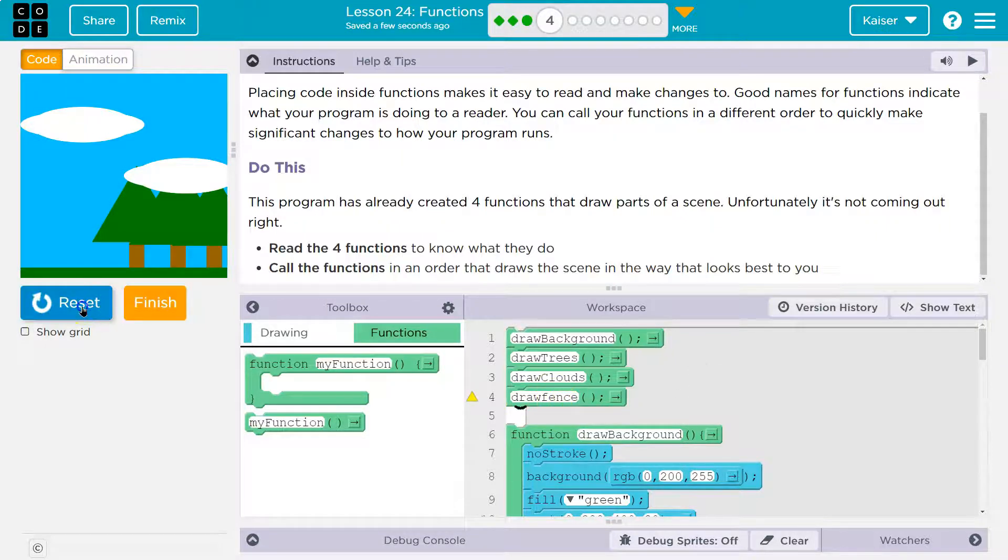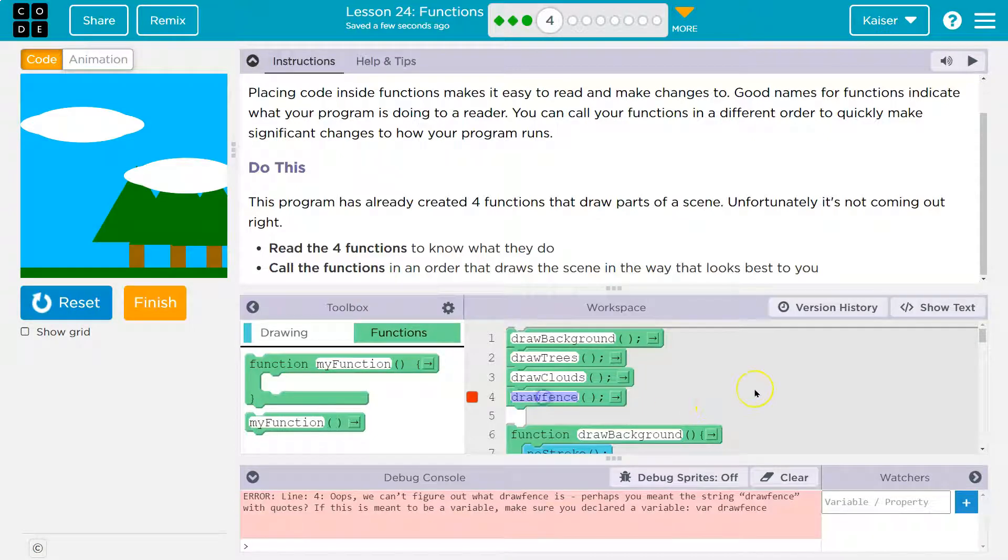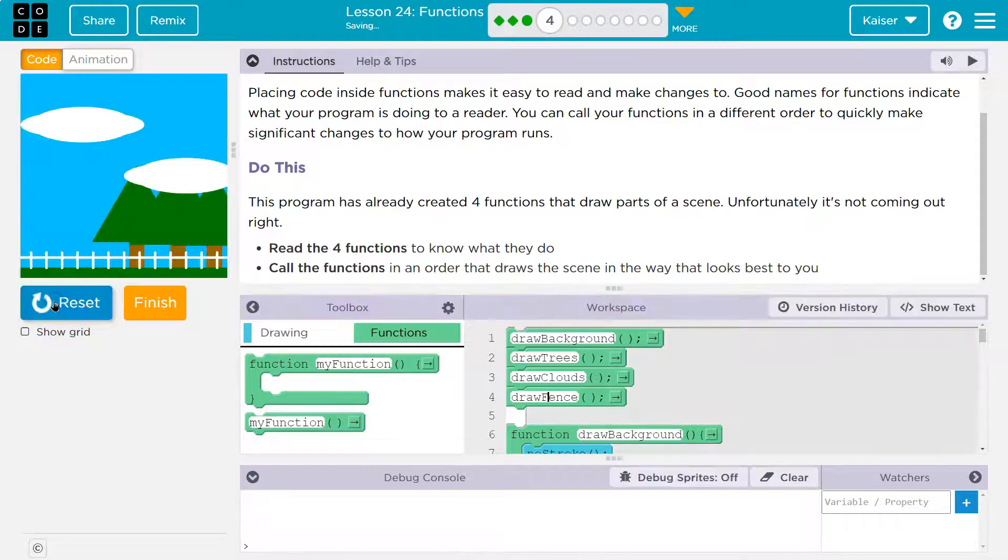It has to be exactly as they wrote it. And how they wrote it was like this. And that's called camel case, where you capitalize new letters, new words, but not the first. It's common in programming.